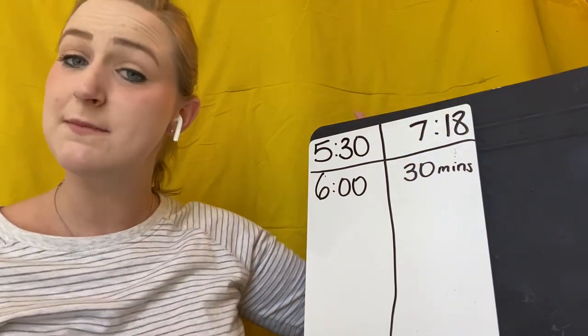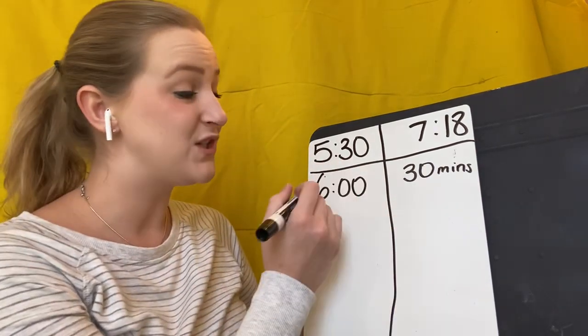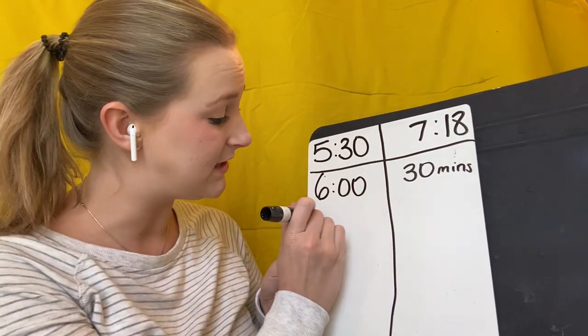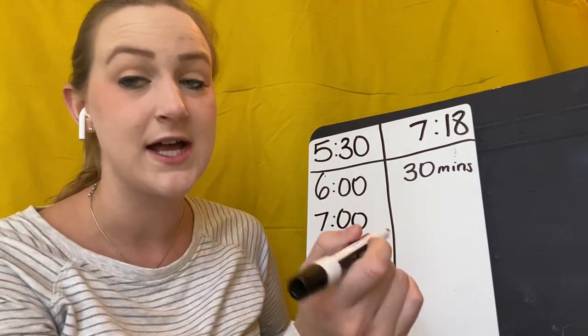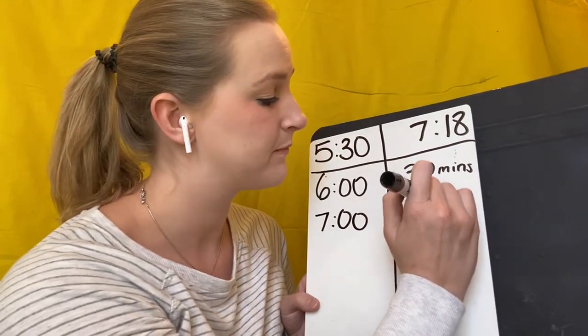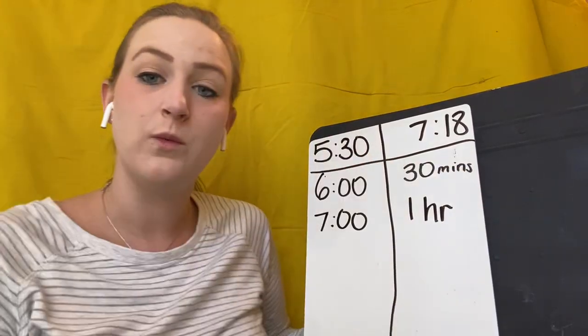So I'm still trying to make my way to 7:18. Now I can do a big jump from six o'clock to seven o'clock because I know that from six o'clock to seven o'clock, that's one hour. One hour right there.